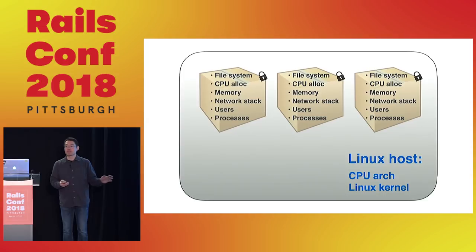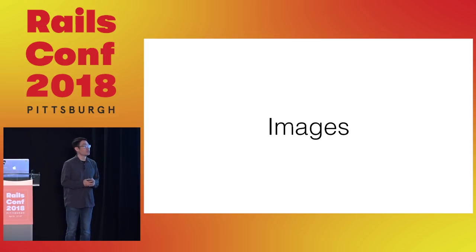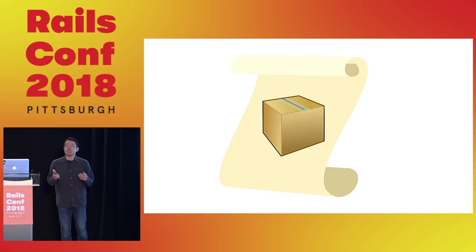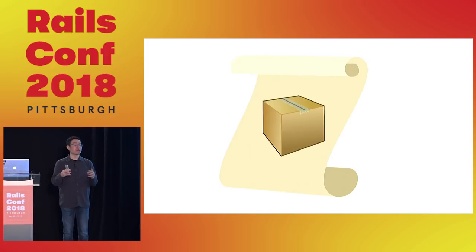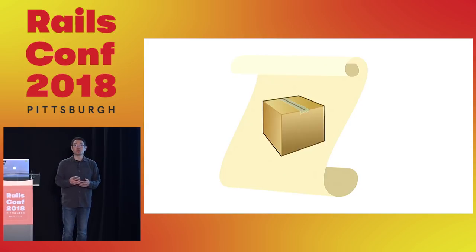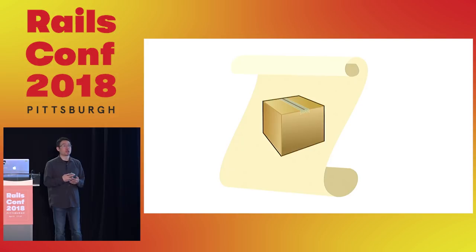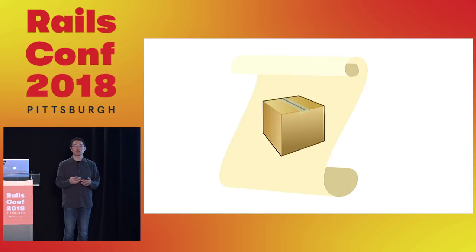The next concept we need to cover is images. An image is basically a template for creating a container. Most of that consists of a file system snapshot — the files and directories you need to start your container: your application, the files that comprise your operating system, any dependencies. All of that lives in the image.